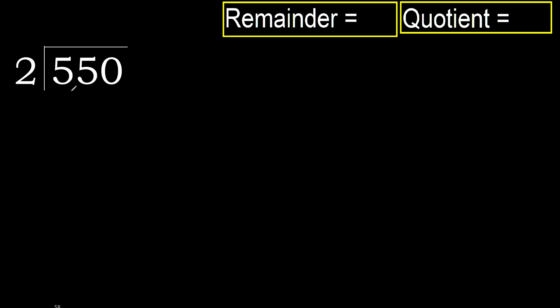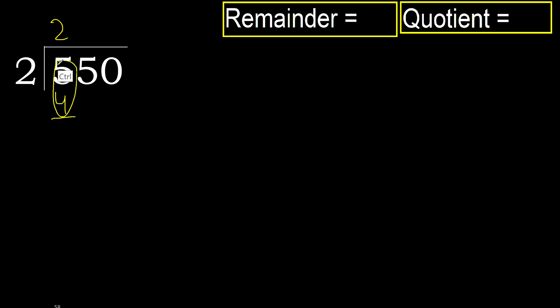550 divided by 2. 5 is not less, therefore with 5: 2 multiplied by which number is nearest to 5 but not greater? 2 multiplied by 3 is 6 — 6 is greater. 2 multiplied by 2 is 4 — 4 is not greater. Subtract.